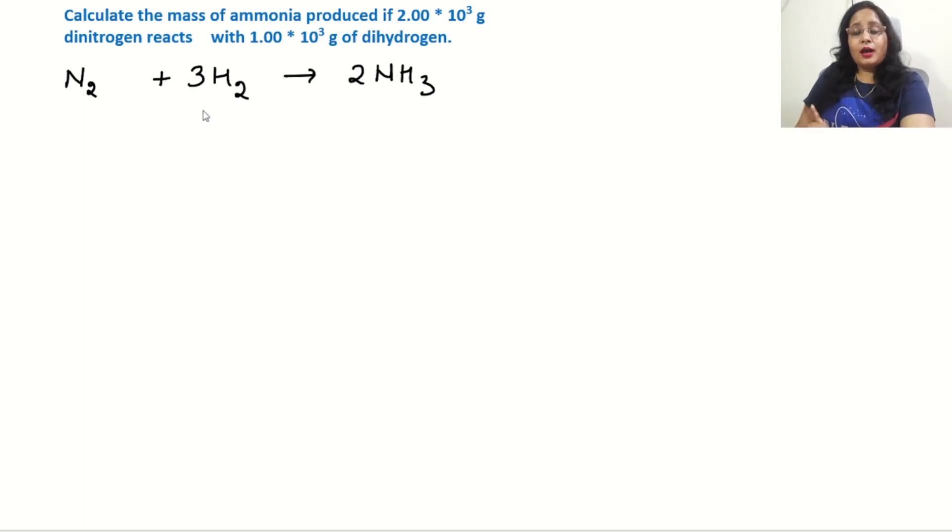The given amounts are: nitrogen is 2.0 × 10³ grams, hydrogen is 1 × 10³ grams, and we need to find the mass of ammonia. We will convert the given mass to moles because moles are easier to work with.